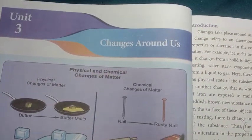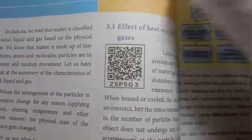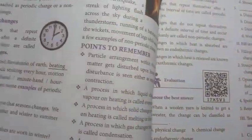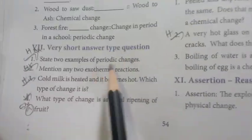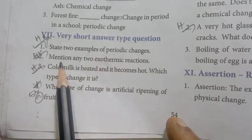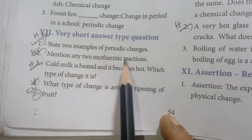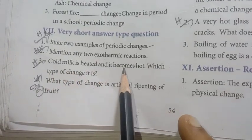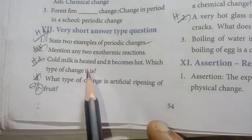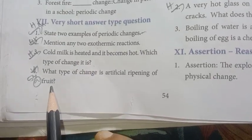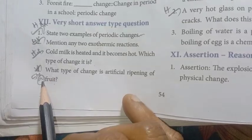Unit 3: Changes Around Us. Let's check the 1-mark questions. Page number 54 — very short answer type questions: First one: State 2 examples of periodic changes. Mention any 2 exothermic reactions — this is an important question. Cold milk is heated and becomes hot — which type of change is it? What type of change is artificial ripening of fruit?